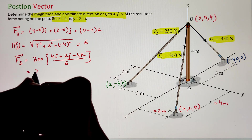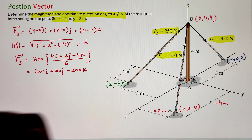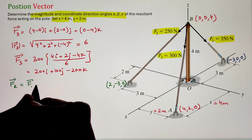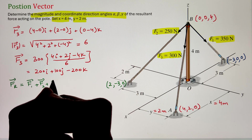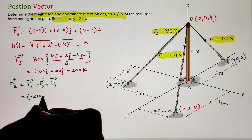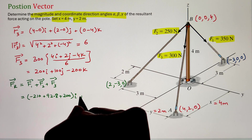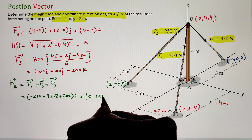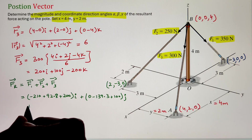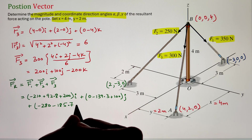Now that we have all three forces in Cartesian vector form, we can write the resultant force as the sum F1 plus F2 plus F3. We must add the I components together, the J components together, and the K components together. The final resultant force is 82.8 I minus 39.3 J minus 665.7 K Newtons.